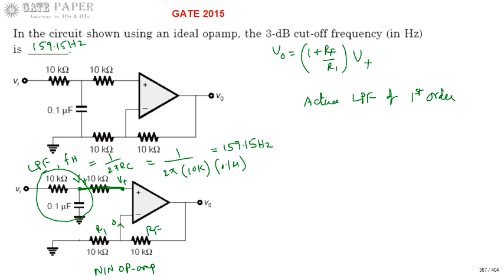So the disadvantage can be overcome if you are using active filter. Active filter is nothing but you are giving the output of low pass filter or high pass filter, that is output of a filter, to an active element which is going to be acting as amplifier.